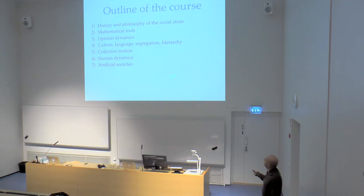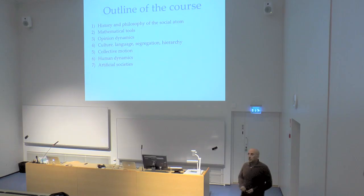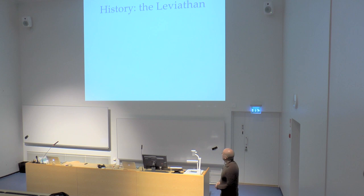This is the outline of the course, not necessarily in this order — seven topics for seven lectures. This first lecture is the historical and philosophical intro to the social atom. Next time there will be something about mathematical tools: how to play with distributions, bin distributions, log scales, and so on, to make sure everyone understands what I'm showing. Then we'll discuss phenomena like opinion formation, cultural language segregation, hierarchy, collective motion, human dynamics, and finally how to devise agent-based models to model artificial societies.